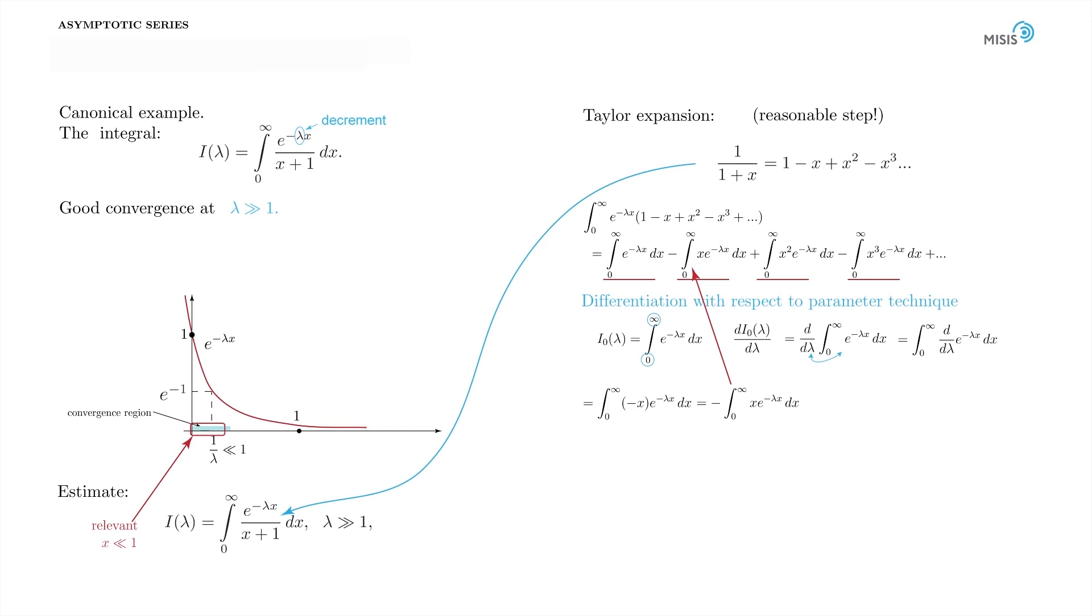Therefore, the first integral in the sum is turned into the second one with simple differentiation with respect to parameter. If we denote the second one by i₁, then i₁ is simply the minus derivative over lambda of i₀. Now, let's try to do the same trick twice. We differentiate i₀ with respect to lambda two times. Again, the derivative is pushed through the integral sign and acts on the exponential only. This time it brings two minus x factors into the integrand. This way, we obtain the third integral in our series. So, i₂ is equal to the second derivative of i₀ with respect to lambda.